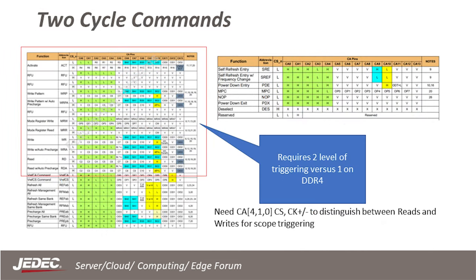Here is a chart from the JEDEC spec giving more details on each of the commands. Each command in the red box is a two-cycle command, while all the remaining commands are one cycle. The first five CA bits and the chip select bit are used to distinguish each of the commands from each other. Because of all these complexities with DDR5 commands compared to DDR4 commands, a protocol analyzer approach is going to be much more reliable than trying to use a scope.